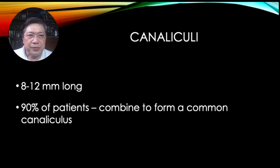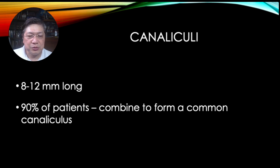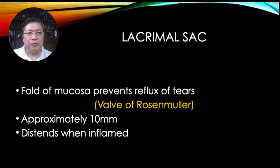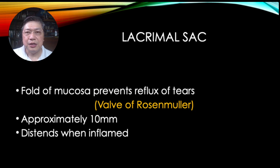In 90% of patients, you will have a common canaliculus. In 10%, the canaliculi enter separately into the lacrimal sac. From there, it enters the lacrimal sac, which has a small valve — the valve of Rosenmuller — basically a fold of mucosa that prevents the reflux of tears back into the eye. There has been research questioning the existence of the valve of Rosenmuller, as a consistent fold of mucosa is not found in every patient. What they found is that the canaliculi enter the lacrimal sac at an angle, so when the sac is full, it distends and kinks the canaliculus.